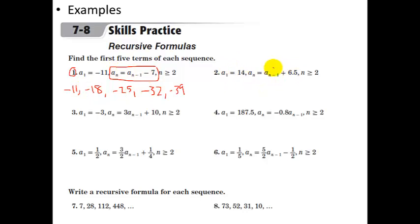This one, just by looking at the formula here, you're taking the term and you're adding 6.5. So this is going to be another arithmetic sequence. So we'll skip that one. Let's take a look here. This one is a bit more complicated.